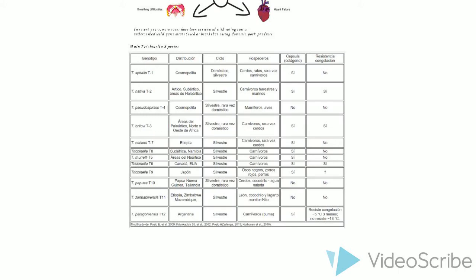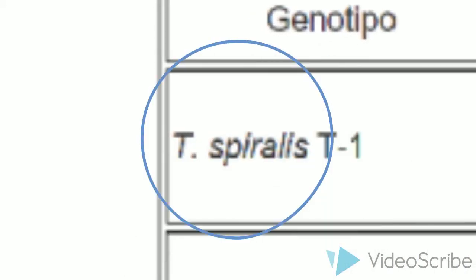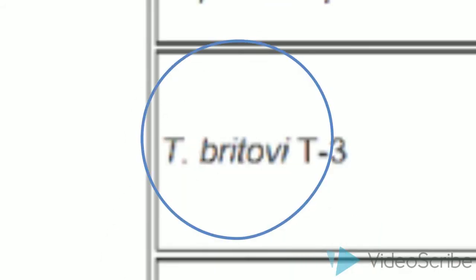As you can see in this table, there are several types of Trichinella, and not all methods will prevent the infection of all species, but we are going to focus on Trichinella spiralis and britovii, which are the most common ones in Spain.